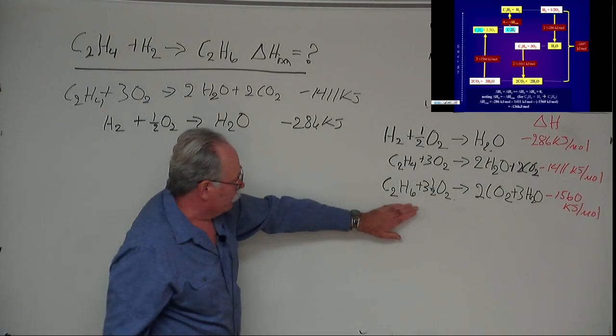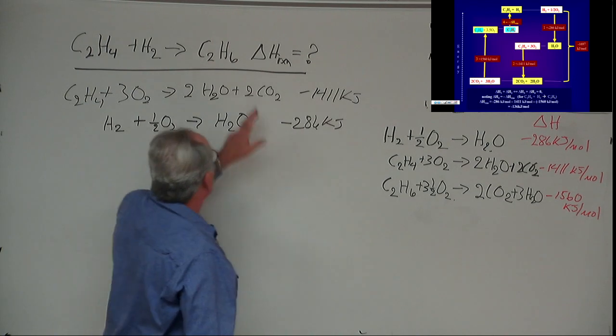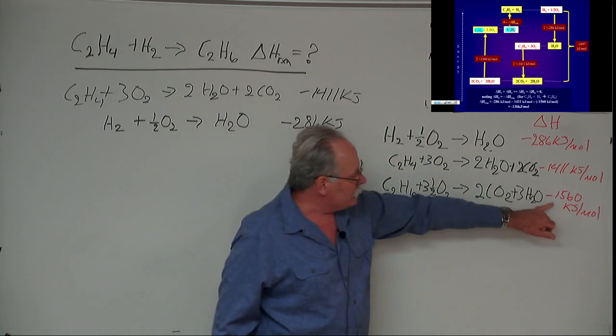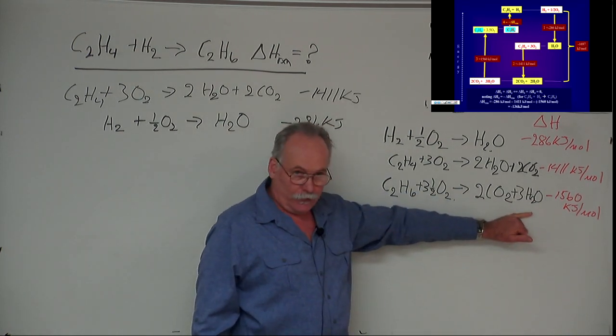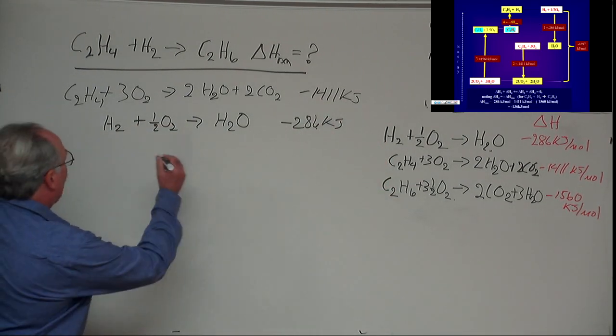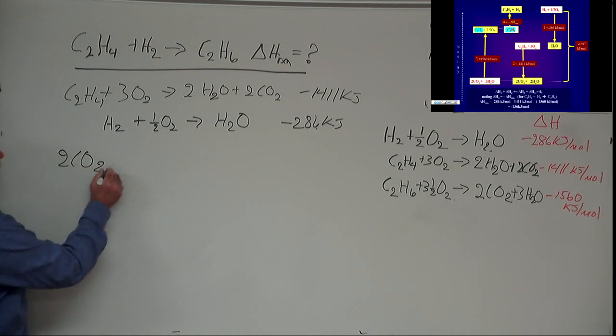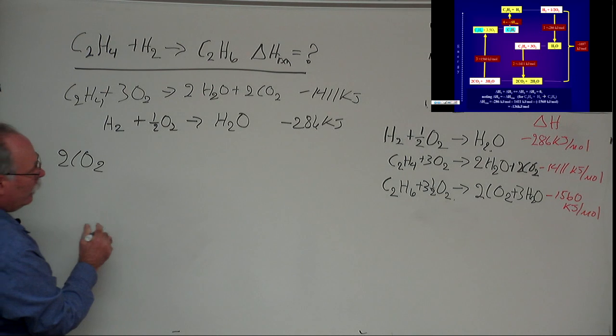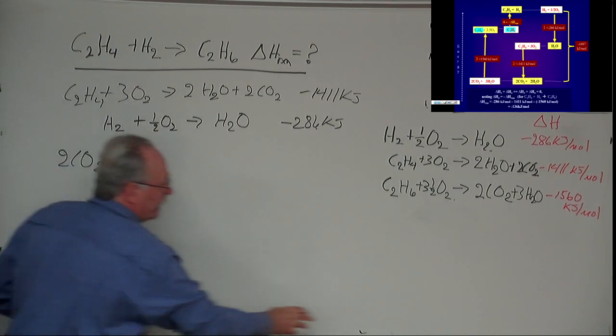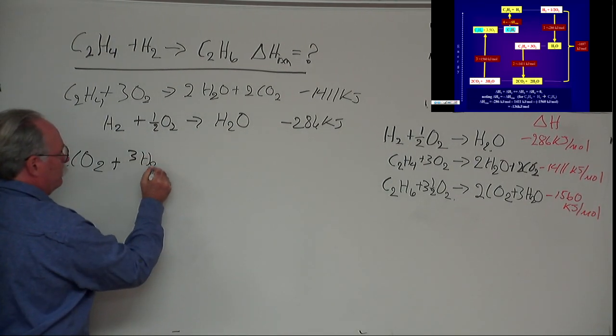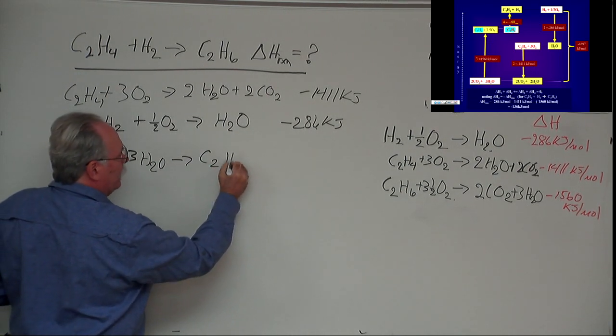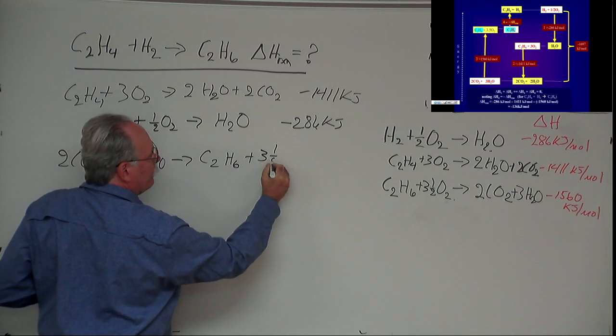I now need C2H6. This is over here. It's a reactant here, it's a product here, so I have to write it backwards, which means that I change the sign. Going this way, it's exothermic by 1,560. Going this way, it's endothermic. So now I'm going to react the two CO2s that I had created plus the three H2Os that I had created, and I'm going to make C2H6 plus three halves O2.